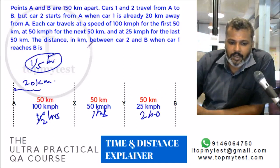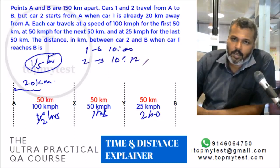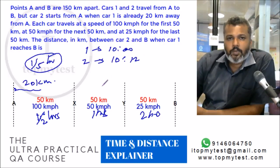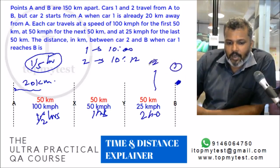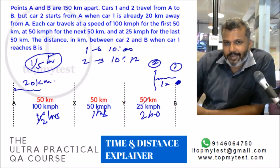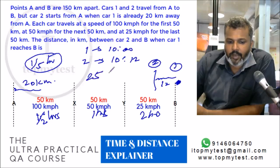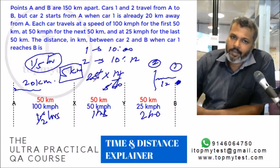For example, if Car 1 started at 10:00, Car 2 would start at 10:12. This 12-minute lead persists to the very end. So when Car 1 reaches B, Car 2 still has 12 minutes of journey remaining — and this is in the last segment where speed is 25 km/h. The distance Car 2 still needs to cover is 25 × (12/60) = 25 × (1/5) = 5 kilometers.